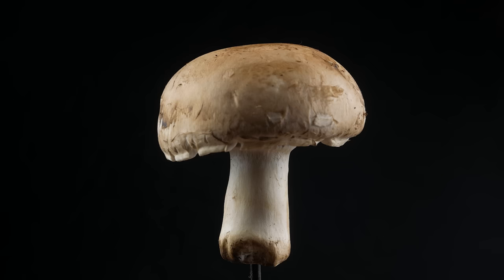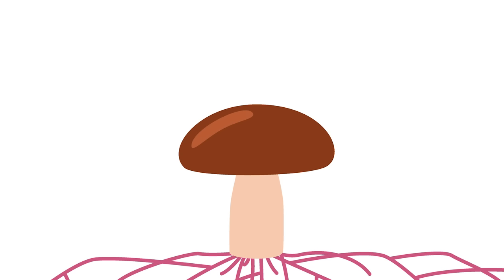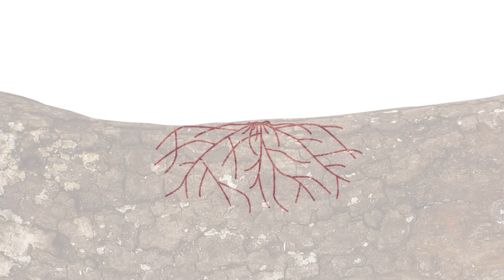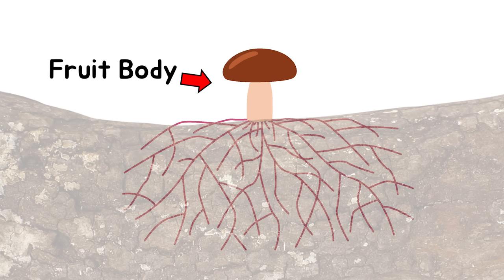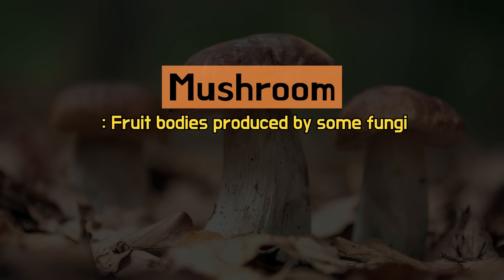A surprising fact is that mushrooms are not the main body of this organism — they are reproductive structures developed for reproduction. The main body of a mushroom is the mycelium, which spreads like roots beneath the surface. The mycelium absorbs nutrients and grows, eventually developing reproductive structures called fruit bodies. The large fruit bodies produced by some fungi are what we refer to as mushrooms.